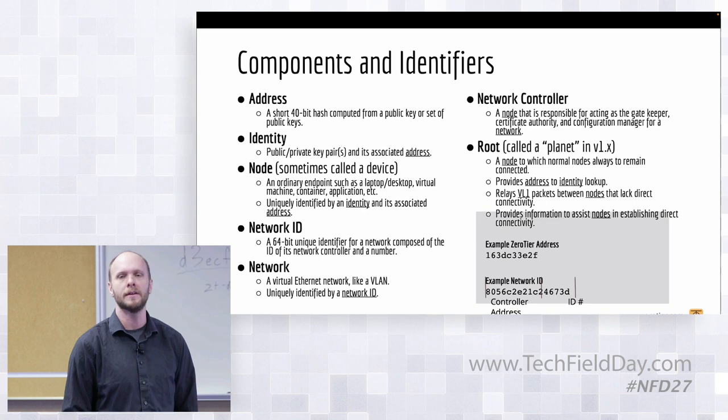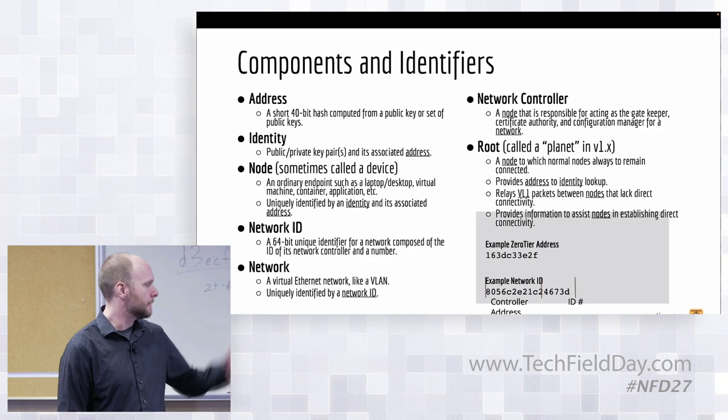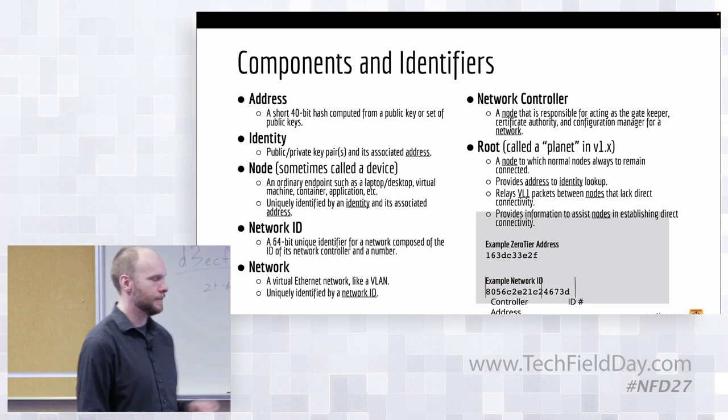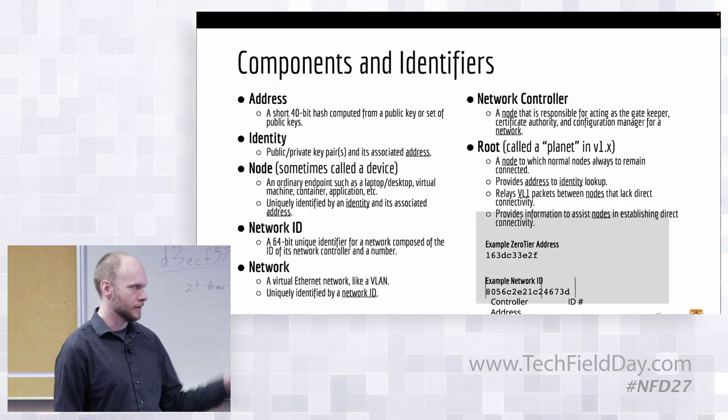What that means is the network controllers - the communication is inbound via VL1, which means that it's really easy to do high availability there. The network controllers are also logically separate from the roots. And if they go down, the things that are already on the network talking will continue to talk. You just can't make changes to your network or add things that have been offline for a long time if your network controller is down. So these are not really like hot single points of failure. You don't want them to go down, but it doesn't kill everything if they go down. And then yeah, these are some of the core concepts that you'll run into if you read ZeroTier docs. You've got addresses, identities, which is the address with its public keys derived from node, network ID, network controller, all the rest of this.